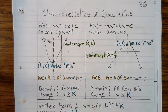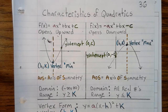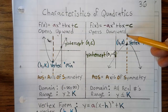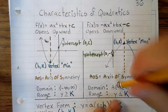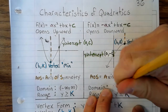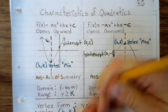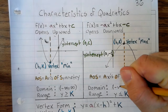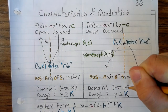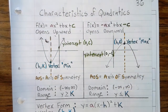When f(x) = -ax² + bx - c, the quadratic opens downward and the vertex is a maximum. The axis of symmetry is a vertical line that cuts through the vertex. The domain is all real numbers, written as negative infinity to positive infinity. And the range is y less than or equal to k.